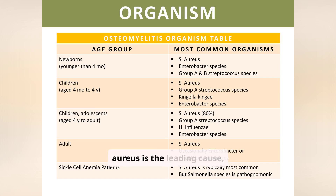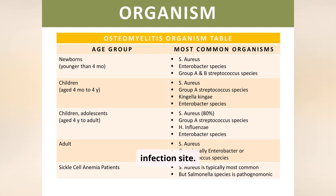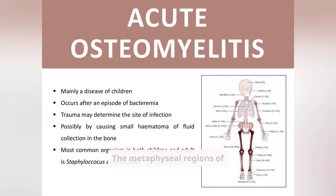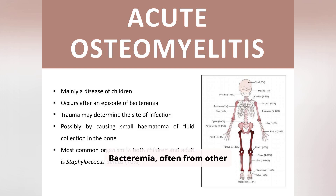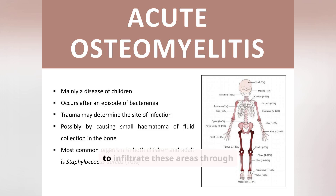Acute osteomyelitis mainly affects children and is often preceded by bacteremia. Staphylococcus aureus is the leading cause, and trauma can determine the infection site. The metaphysial regions of long bones are commonly affected, with bacteremia — often from other infections — allowing bacteria to infiltrate these areas through nutrient arteries.